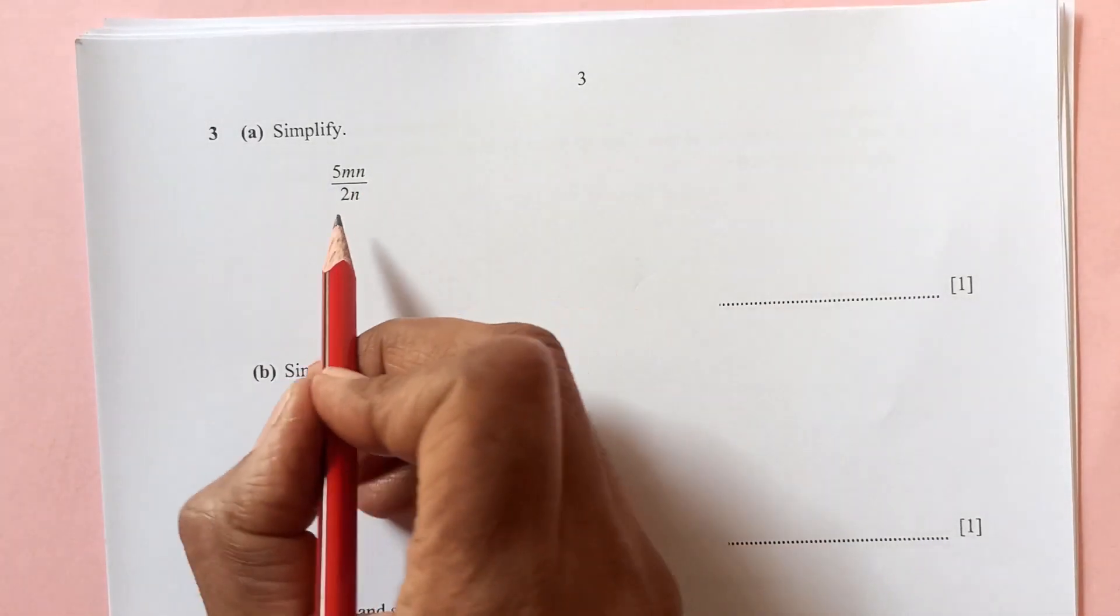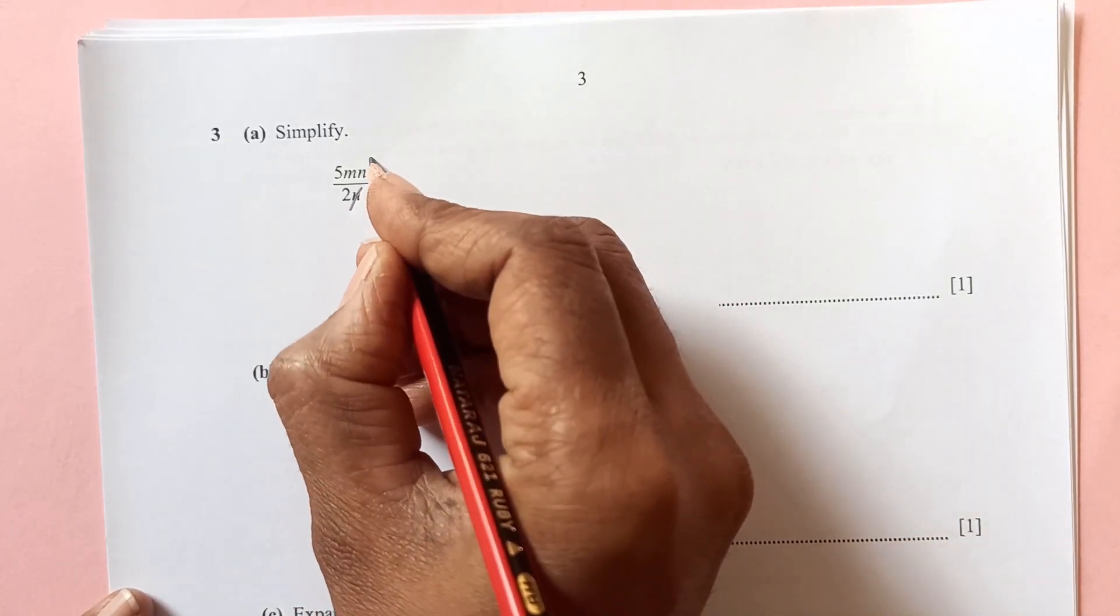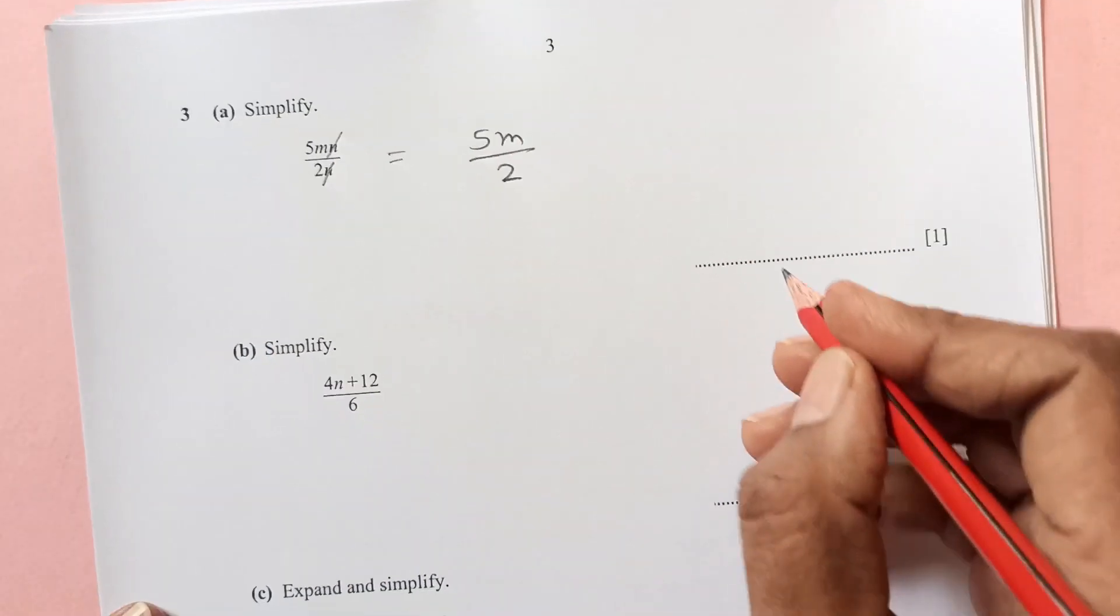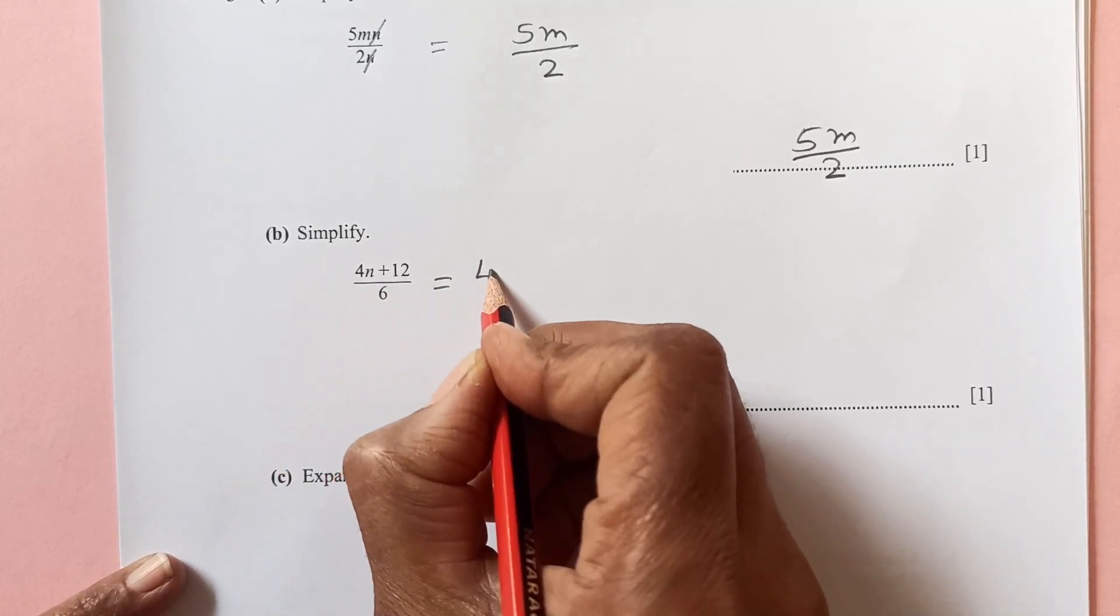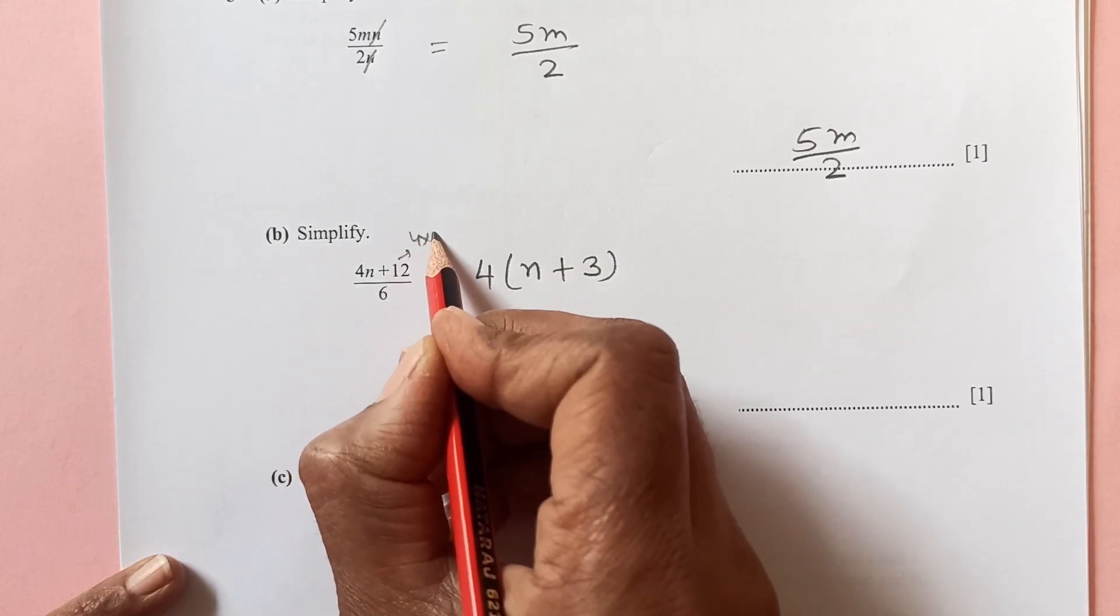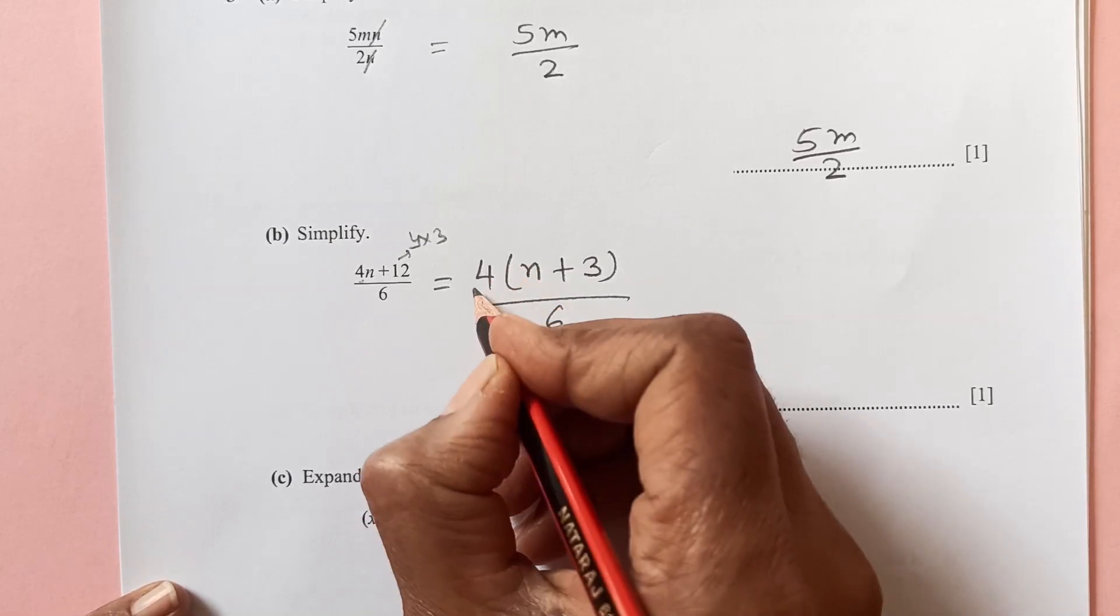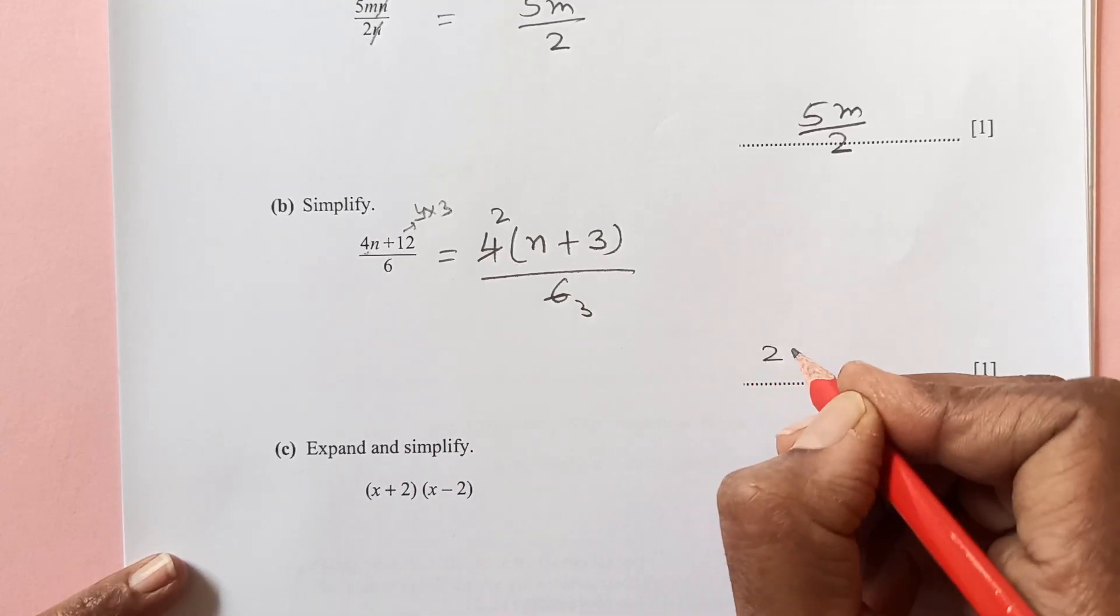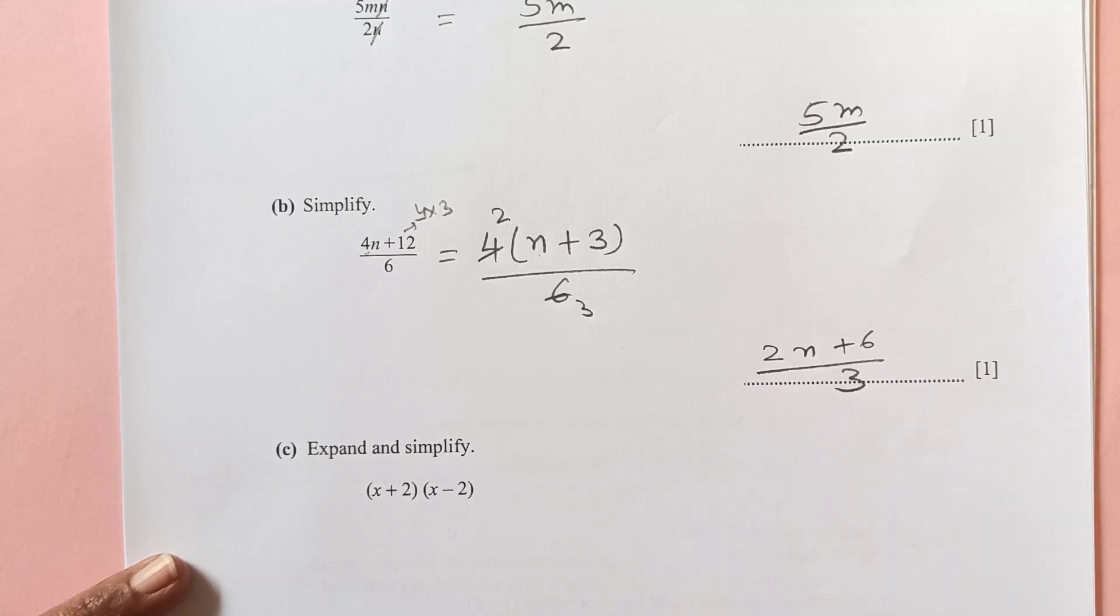Question number 3. Simplify 5mn over 2n. You see n is in the numerator and in the denominator, so we are left with 5m over 2. Now simplify this here. Take out 4 common, so n plus 3, because this 12 is 4 times 3. So 4 and 4 is common, so n plus 3 left inside over 6. This we can simplify 2 times 2, 2 times 3. Final answer is going to be 2n plus 6 over 3.